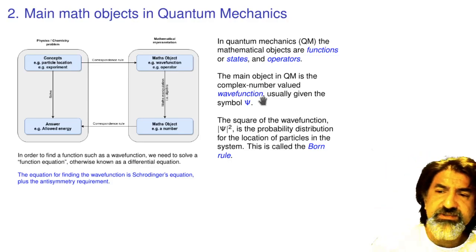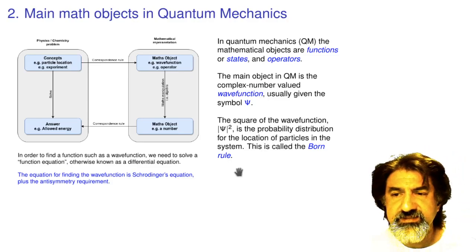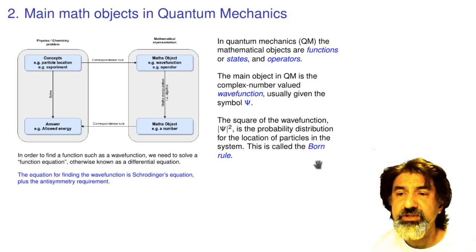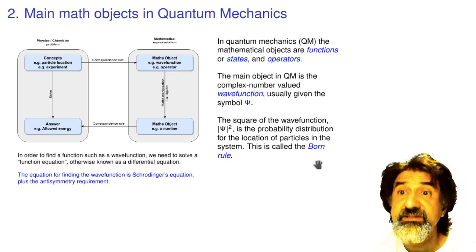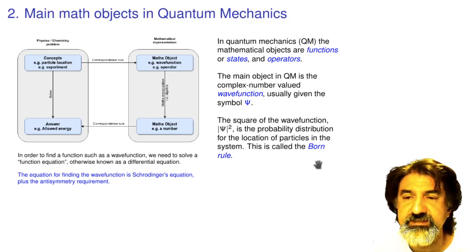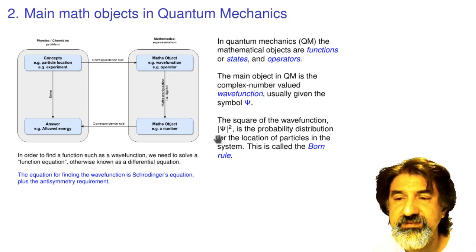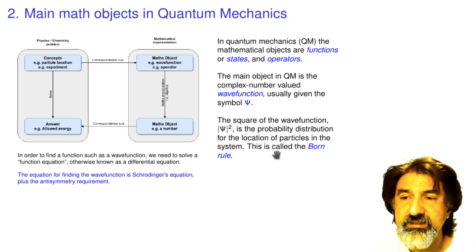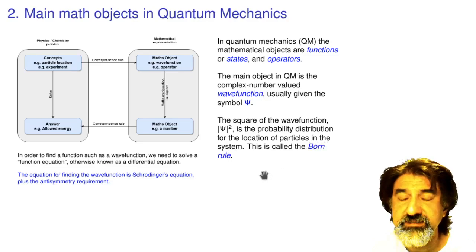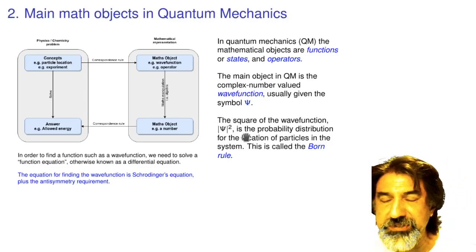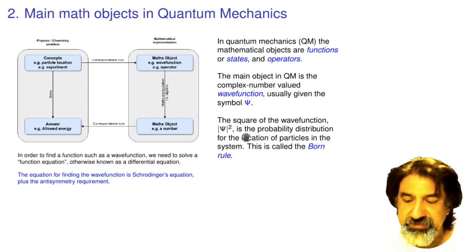The key thing is that the wave function contains all the information about the quantum mechanical system. The wave function by itself doesn't determine anything observable directly, but the square of the wave function determines the probability distribution for locating particles in space. This is called the Born rule — Born actually got a Nobel Prize for noting that ψ² represents the probability distribution, though it was only in a footnote of one of his papers.